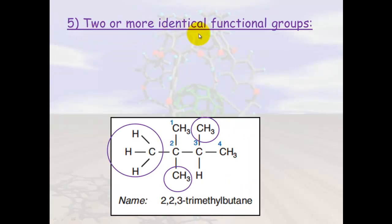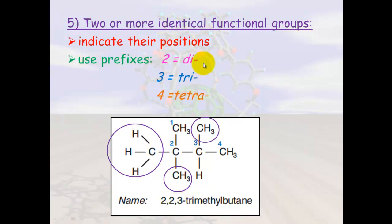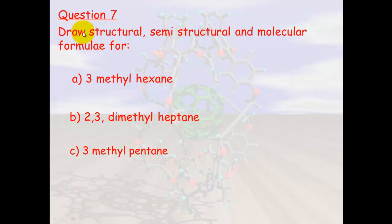If there are two or more identical functional groups, as in this example with three methyl groups, we first indicate their positions. The methyl groups are on positions two, two, and three, so we write 2,2,3. Then we use a prefix to tell us how many groups there are: di for two, tri for three, tetra for four. There are three methyl groups here, so we give it the prefix tri — making it 2,2,3-trimethylbutane, with methyl groups at positions two, two, and three on a butane chain.